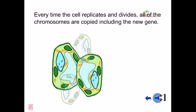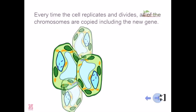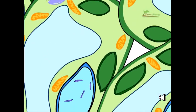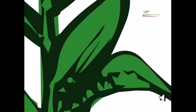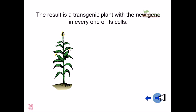Every time the cell replicates and divides, all the chromosomes are copied, including the new gene. The result is a transgenic plant with a new gene in every one of its cells.